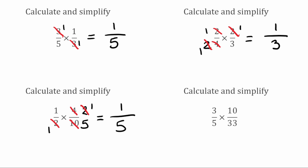For this next question, we've got 3 over 5 multiplied by 10 over 33. Checking the individual fractions — 3 over 5 is in its simplest form, and 10 over 33 is also in its simplest form, so we can't cancel them down individually. Now we're going to look to cross-cancel. Starting with the 3, we come across to the 33. The highest common factor of 3 and 33 is 3, so I can divide both by 3. 3 divided by 3 gives 1, and 33 divided by 3 gives 11.